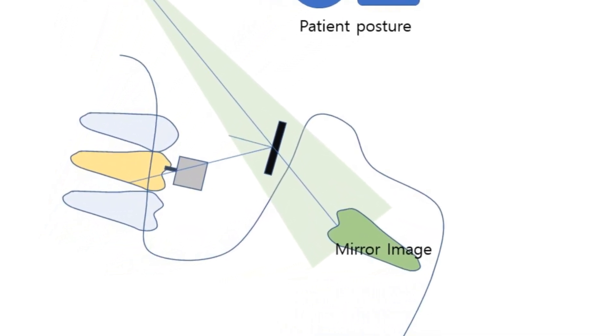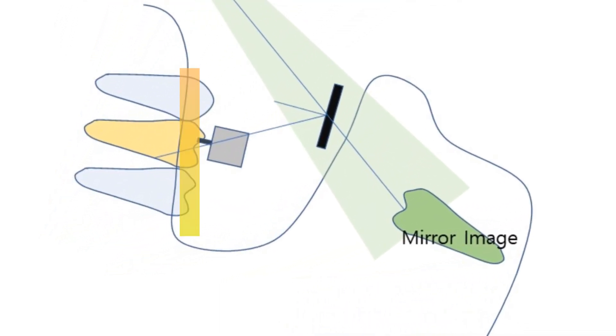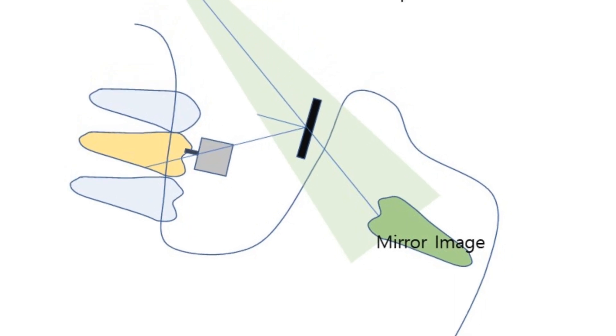Change the patient's posture a little bit upright to make the occlusal plane perpendicular to the ground, and place the mirror away from the operating site as much as possible.